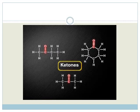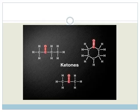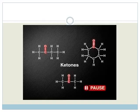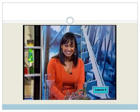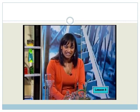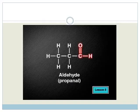Now what about a ketone? Ketones also have a carbonyl group, but the group is inside the molecular structure. Here are a few ketones and you can see that they all look very similar. Can you see how they differ from aldehydes? Yes, ketones always have the carbonyl inside the chain, unlike aldehydes that have the carbonyl on the last or first carbon atom in the backbone.